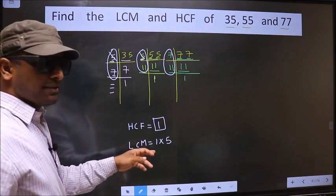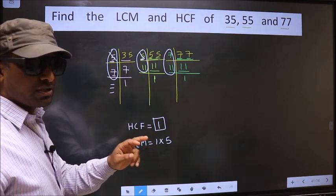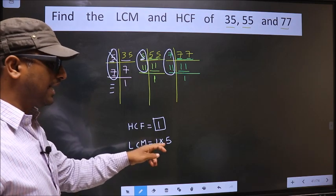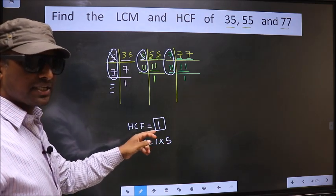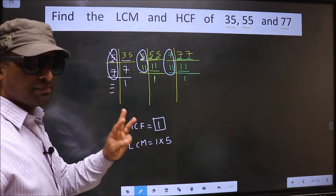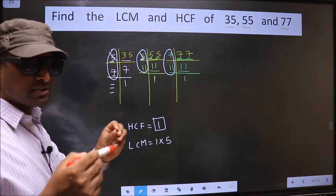For LCM, whether the number is present in 1 place or 2 places, still you will cut and write here. HCF—it should be present in all the 3 places. Understood the difference?